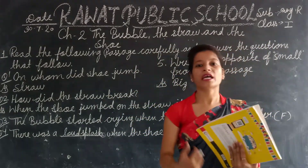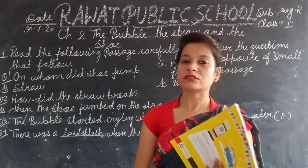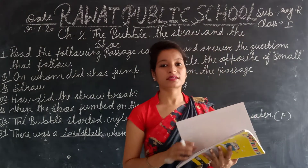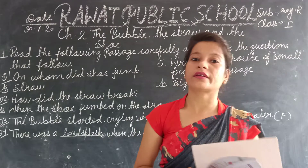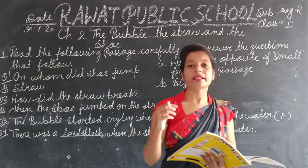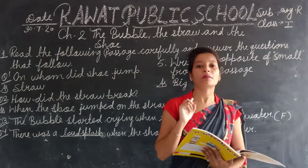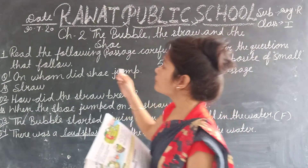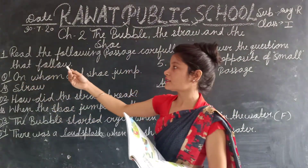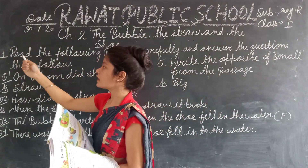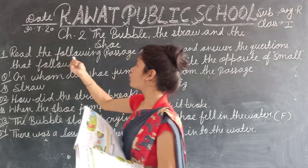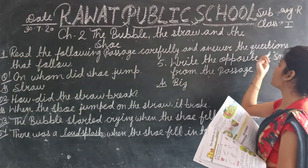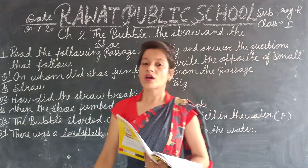This is the first part of this story and I will explain it. In the last class, we have done the exercise: take the correct word and fill in the blanks. So today we are doing question number one exercise. The first exercise is: read the following passage carefully and answer the questions that follow.